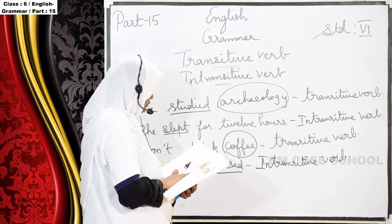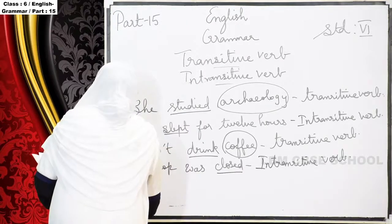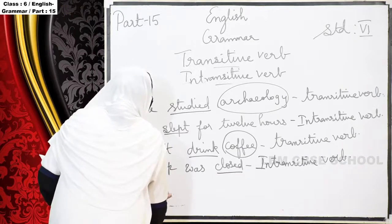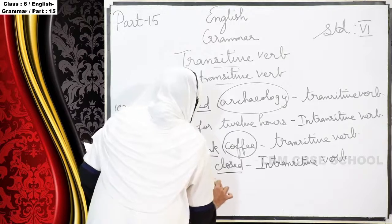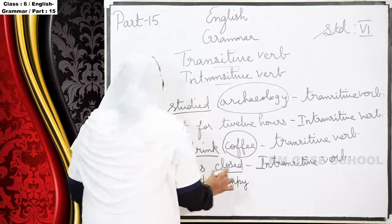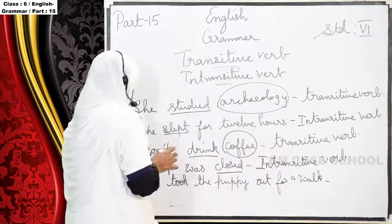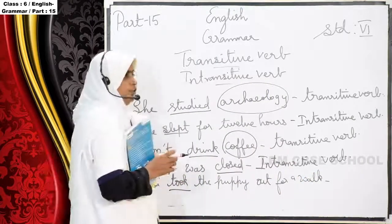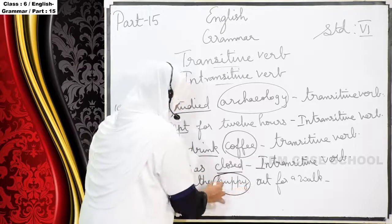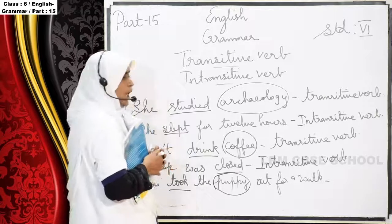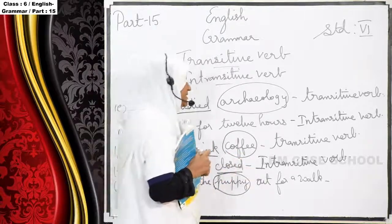One more example — I. 'Shalini took the puppy out for a walk.' 'Took' is the verb and 'puppy' is the object — you have to circle that. Shalini took the puppy out for a walk: 'took' is the verb and it takes the object 'puppy.' So this sentence we call a transitive verb.